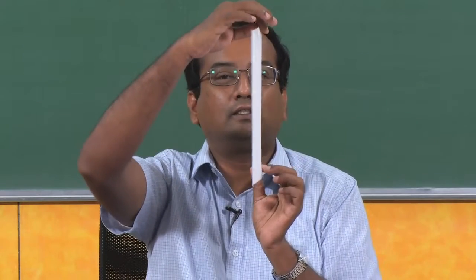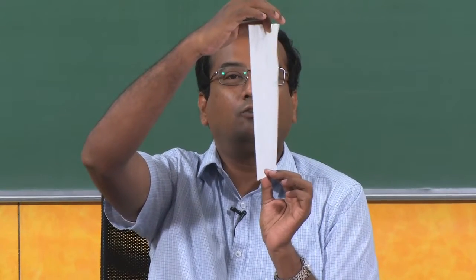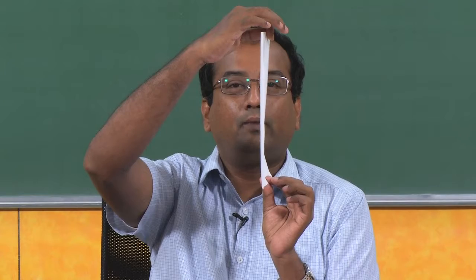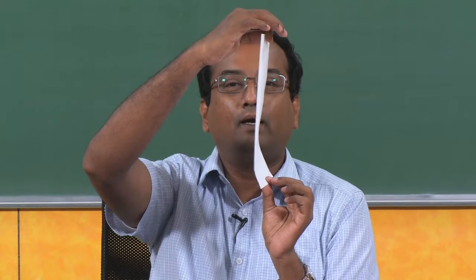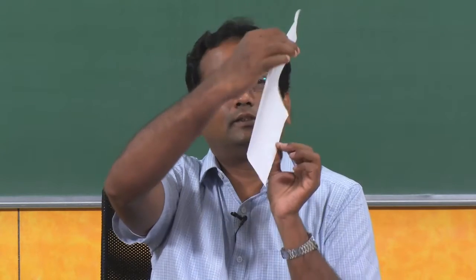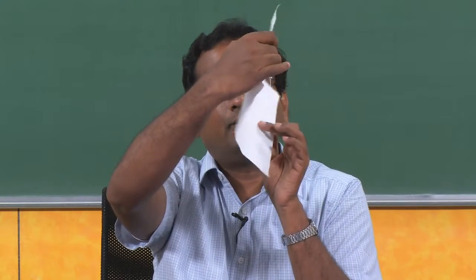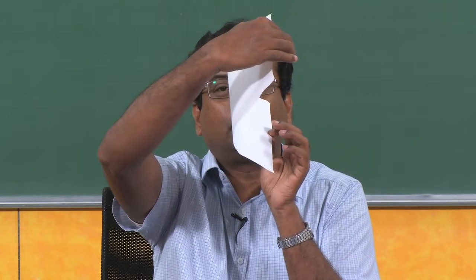If this sheet represents a section of the member, then because of twisting there won't be a displacement just like this. There will be an out of plane displacement like this also.